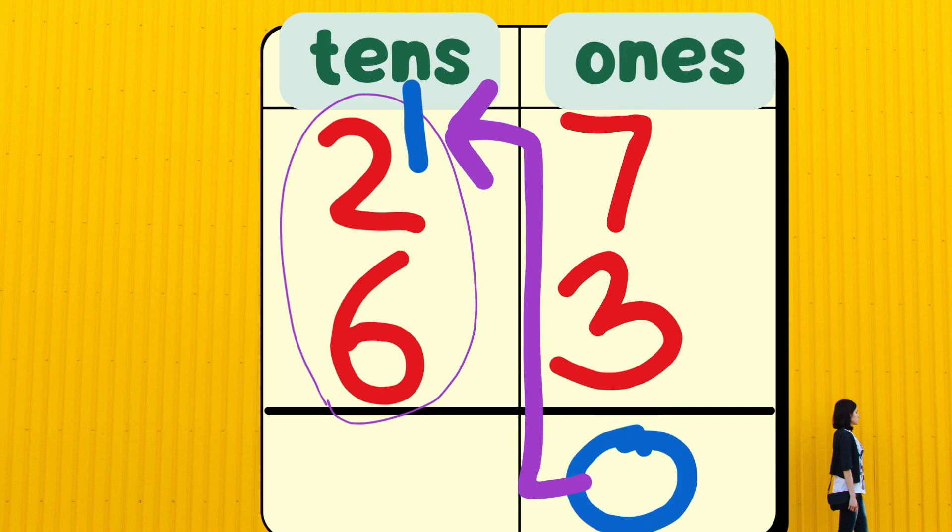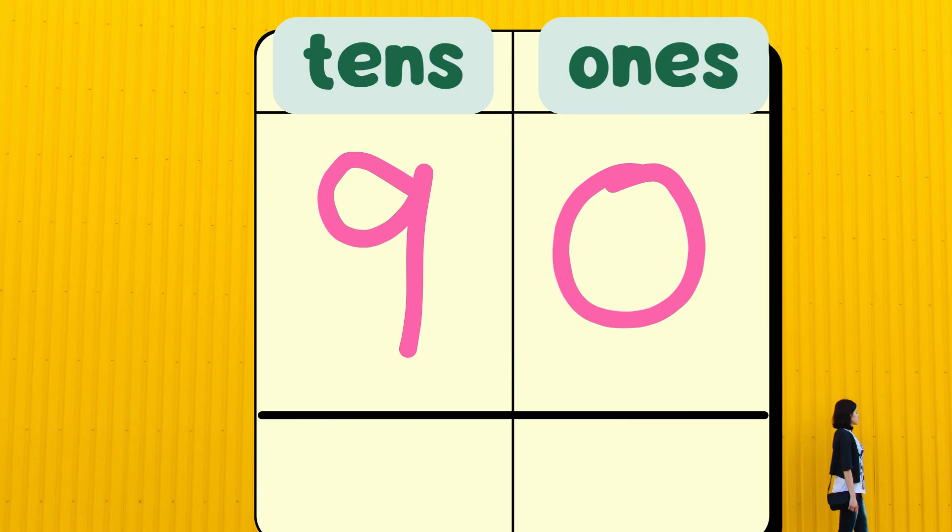Now I need to add the 10s. 6 plus 2 plus 1 gives me 9. Here, 1 is called carryover, because it was carried from 1s place over to the 10s place. 90 has 9 10s and 0 1s.